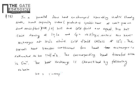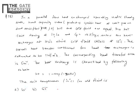The heat exchanger is characterized by the effectiveness relation: ε = (1/2)·[1 − exp(−2·NTU)]. The exit temperature in degrees Celsius for the cold fluid is asked, with options 45, 55, 65, and 75. This is a problem on heat exchangers using the NTU method.